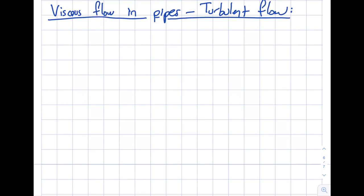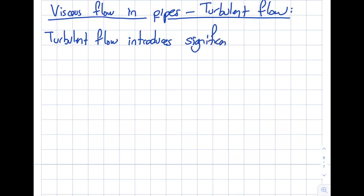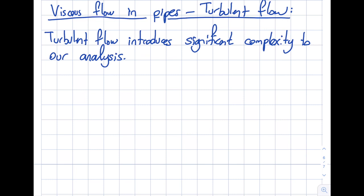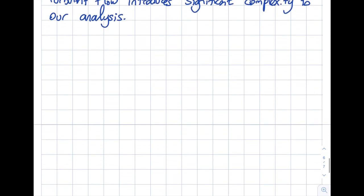Turbulent flow introduces significant complexity to our analysis. In laminar flow, if the velocity is to the right, I only have a u-component. But in turbulent flow it becomes 3D: u, v, w. So what I'm going to do is introduce an equation that is fairly similar to what we discussed before.